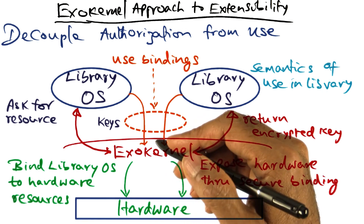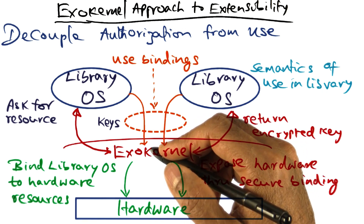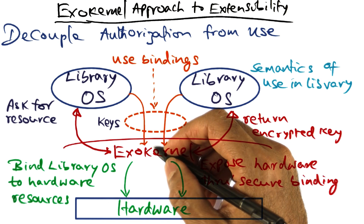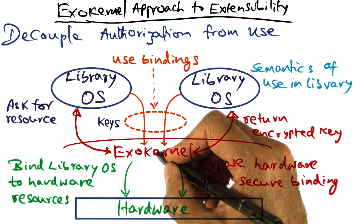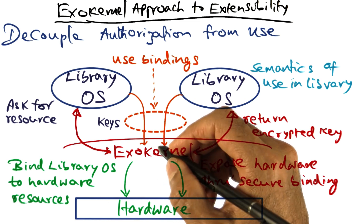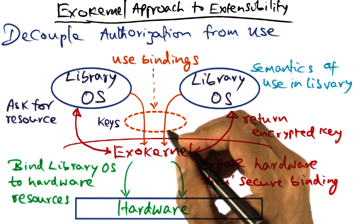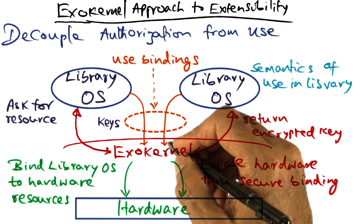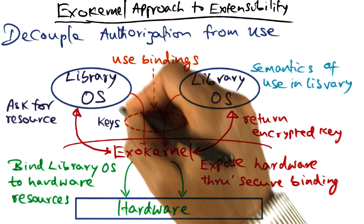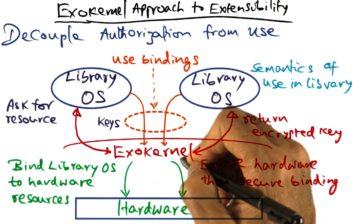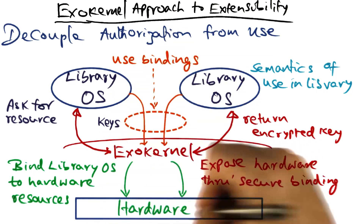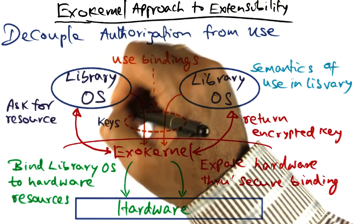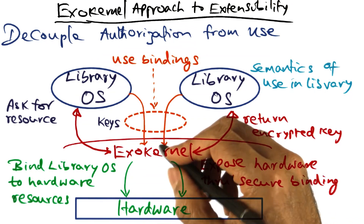This is sort of like a doorman in an apartment building checking when a resident comes in whether the resident is a bona fide occupant of the residence. Once inside his apartment, what the resident does is not something that the doorman cares about. Exactly the same thing is being done by ExoKernel as a doorman for using the hardware resource for which a valid key exists with a library operating system.